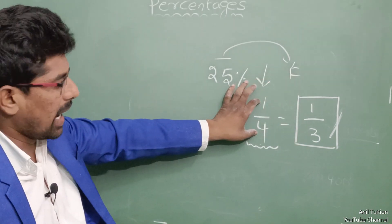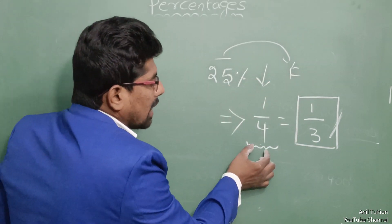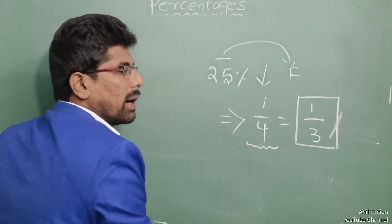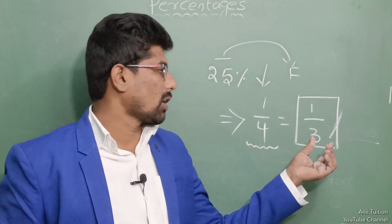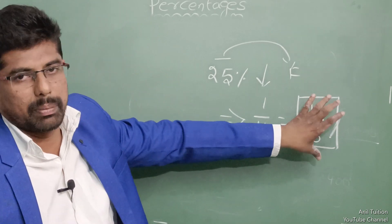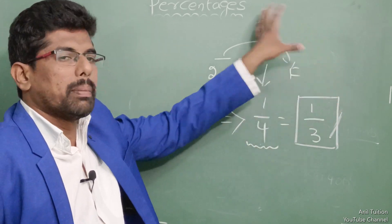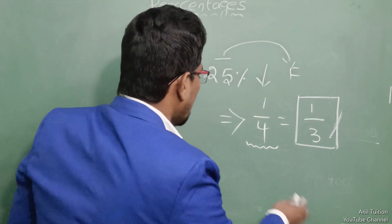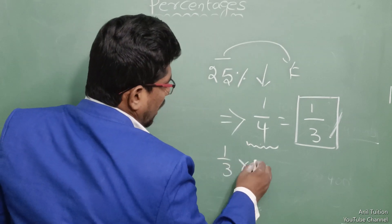Simply try this problem: convert the percentage to a fraction, subtract the fraction from 1, then exchange the numerator and denominator. Multiply by 100 to get the percentage. 1/3 × 100 = 33.33%. This is the simple shortcut method and the problem is solved.